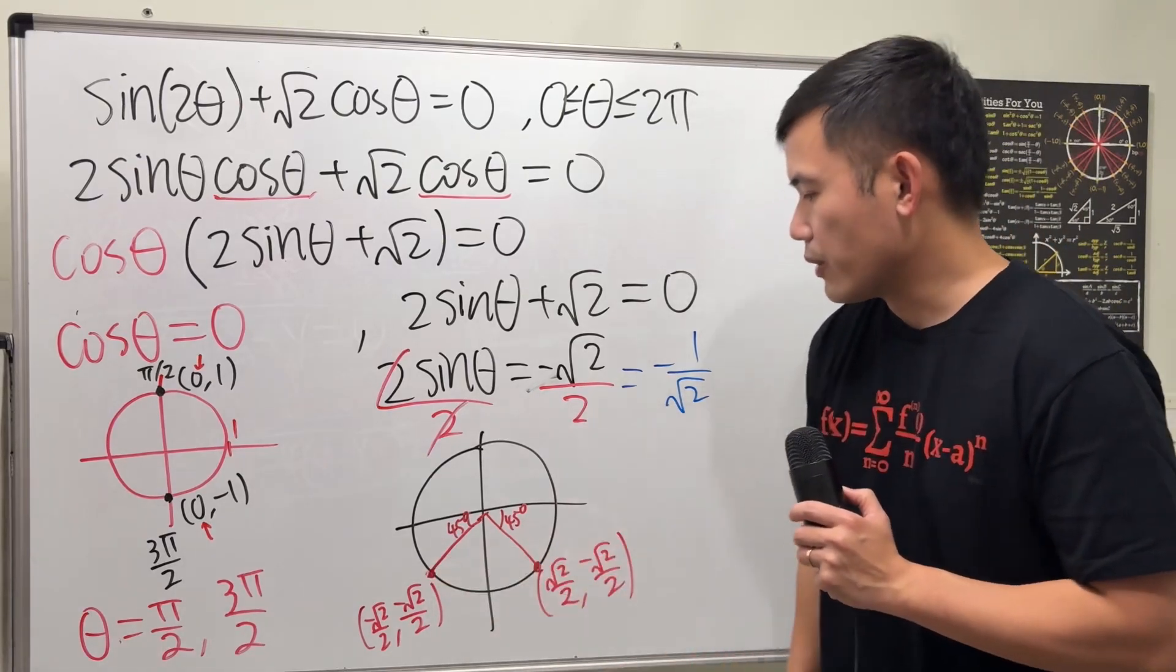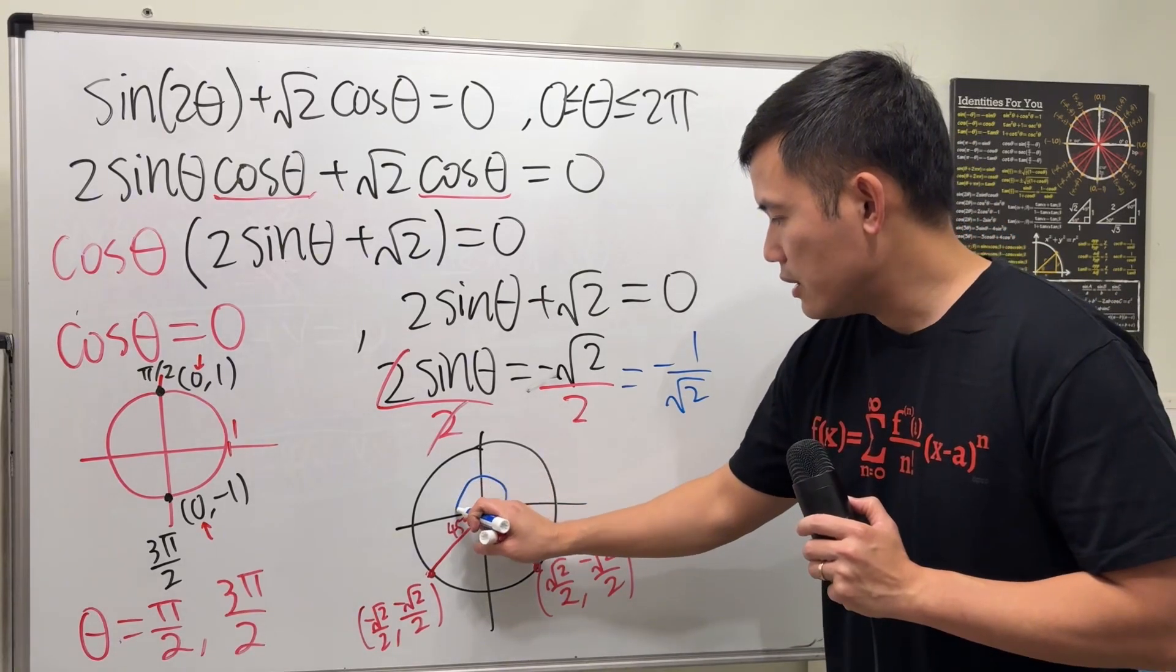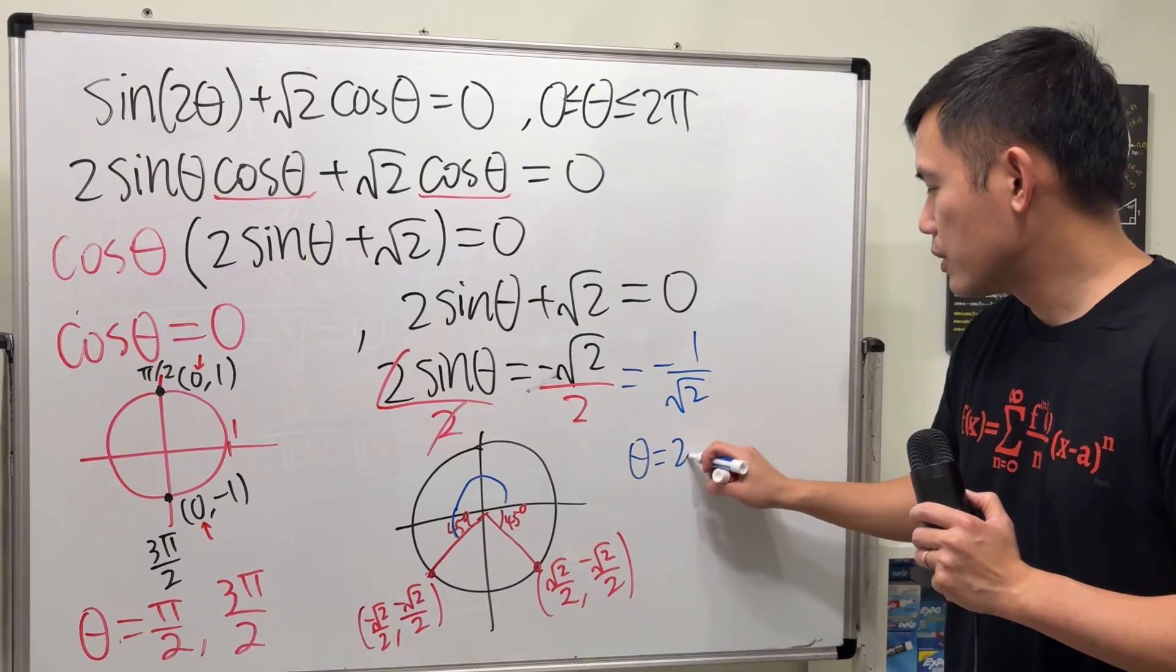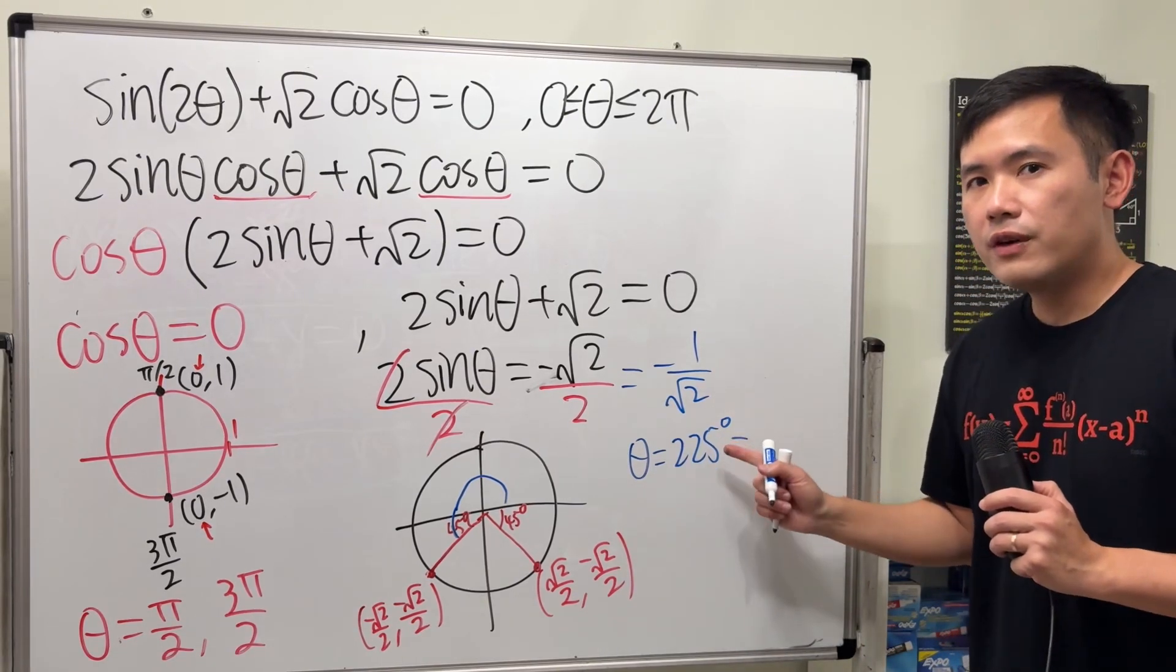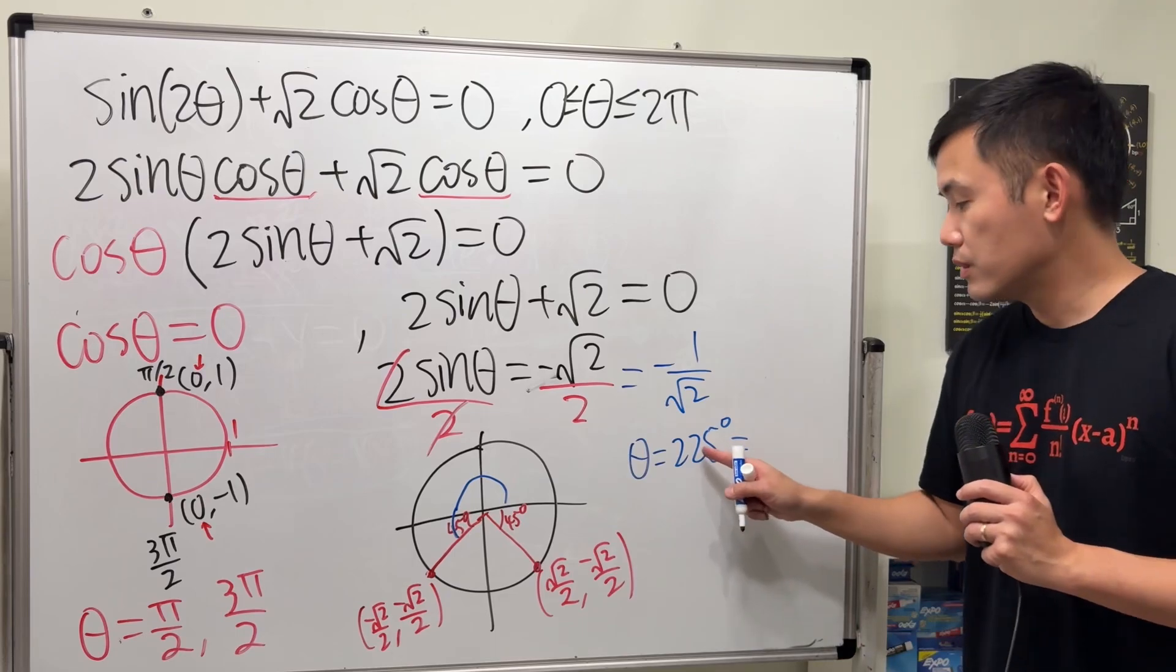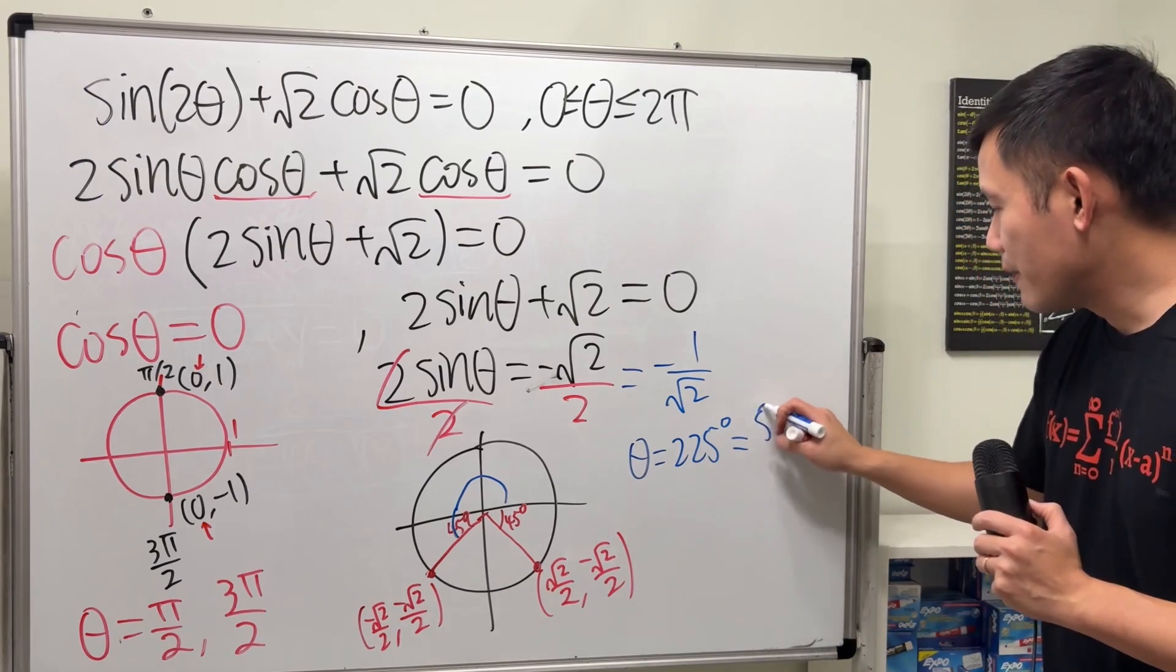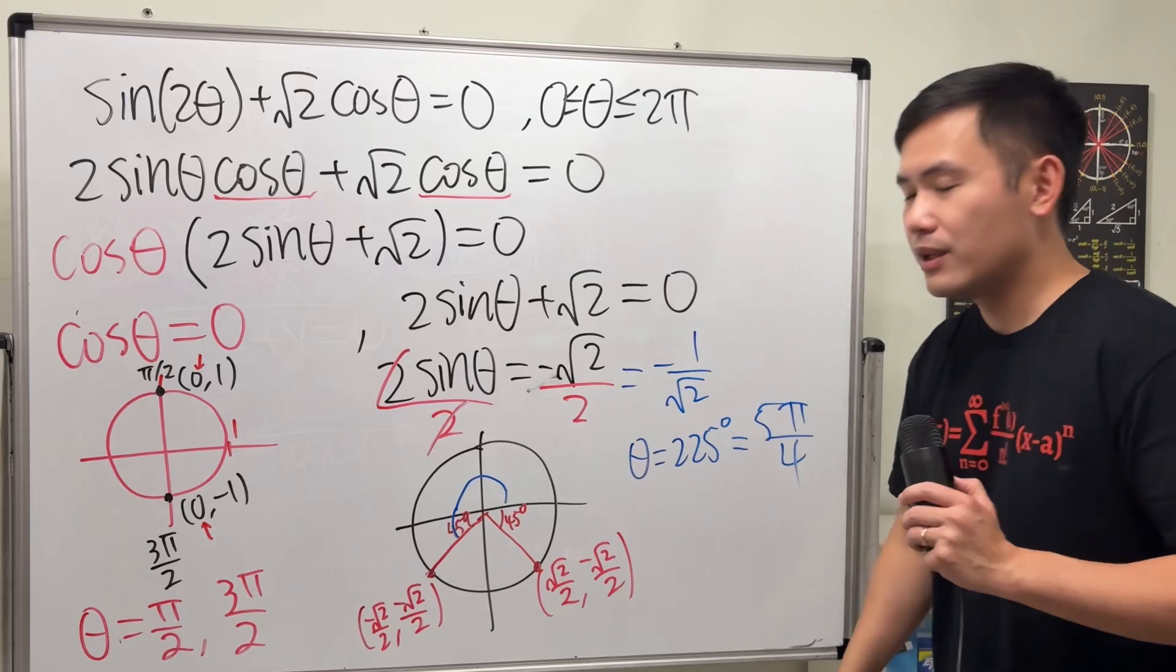Now, what's this angle though? Well, as I said, this right here is 180 plus 45. So the first answer is 225 degrees. Convert that by multiplying this with pi over 180. We end up with 5 pi over 4. And that's where this angle is.